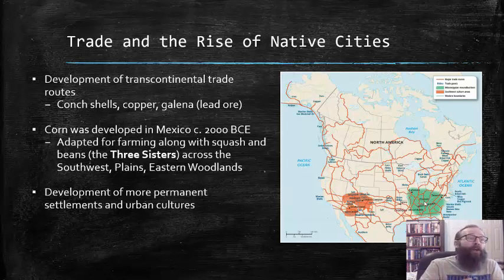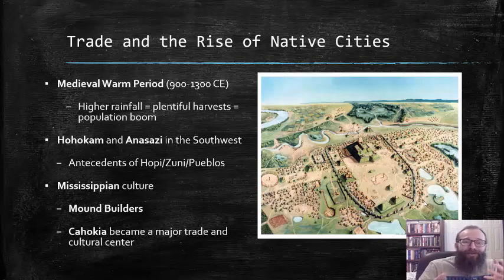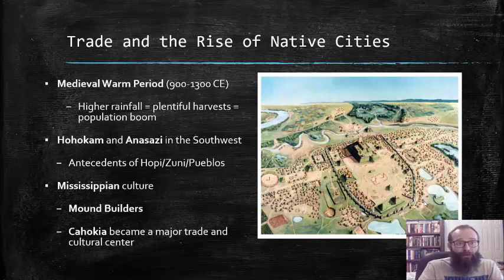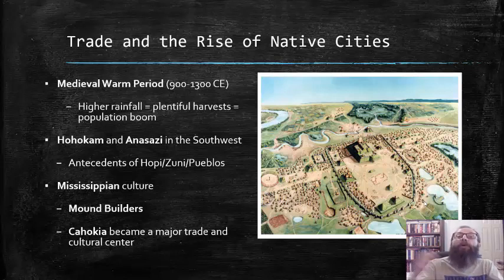The development of more settled agriculture and the spread of these Three Sisters led to more permanent settlements and even some urban cultures in the Americas. Around 900 to 1300 CE, the Earth went through a period known as the Medieval Warm Period, which led to much higher rainfall, which equaled plentiful harvests, particularly of those Three Sisters, which led to a population boom and spurred the spread of urbanization all across the Americas.